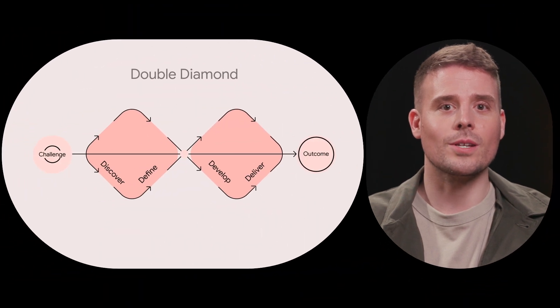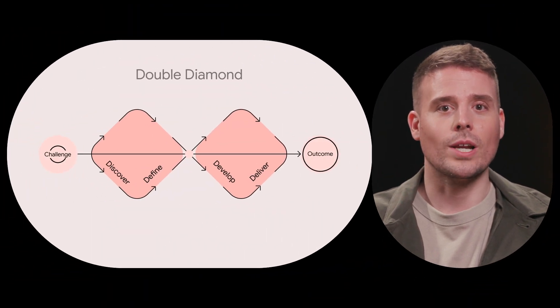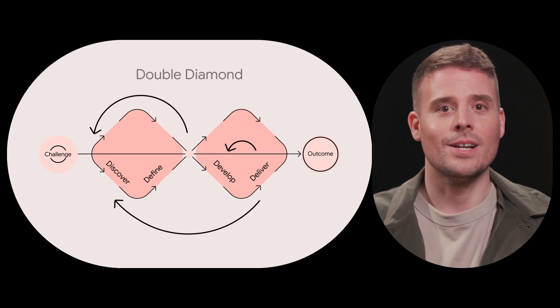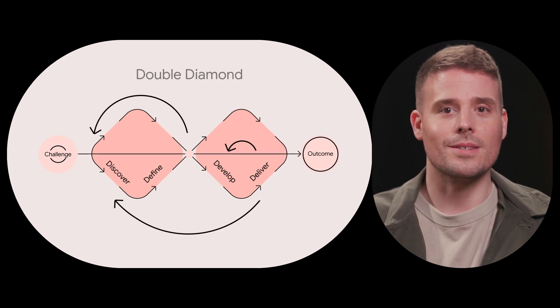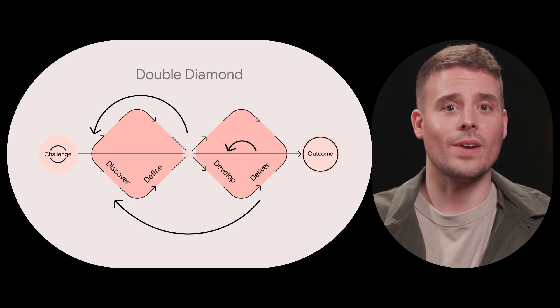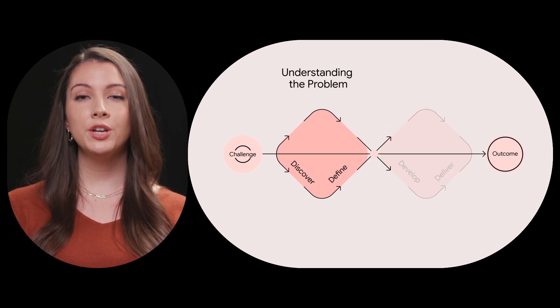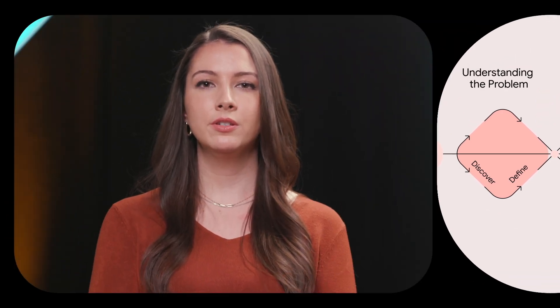There are various types of research in the product development lifecycle. To illustrate this better, we will use the double diamond process. For illustrative purposes, this process may appear linear. However, in reality, you may be switching between each of these diamonds — new insights and requirements may emerge that shift your strategy. So in fact, it may not be linear at all.